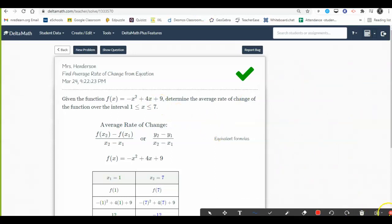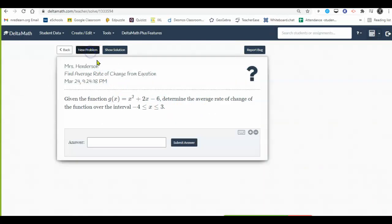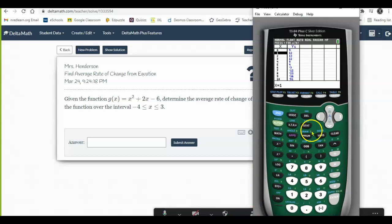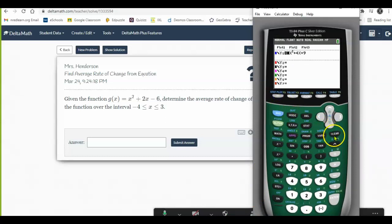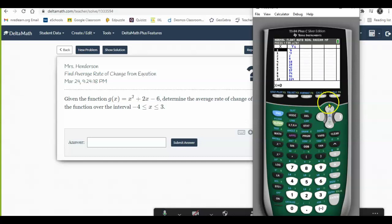Want to try one more? Again, get your calculator out, type the function into the y equals button. This time I have x squared plus 2x minus 6. Go look at your table and grab those y values for your given interval. So the given interval was negative 4 and 3. I've got to actually arrow up my chart here.